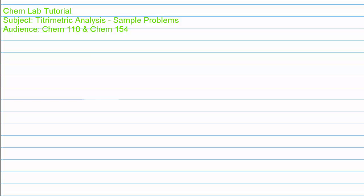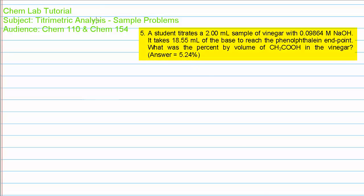Welcome back. We're going to have a look at problem number five in the study guide for the titrometric analysis experiment — specifically experiment 2.1, part 2, where we determine the strength of a vinegar solution in terms of the percent by volume of acetic acid in the vinegar by titrating it with standard sodium hydroxide.